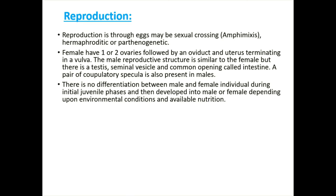Reproduction in nematodes occurs through eggs and is mainly sexual. Modes of reproduction include amphimixis, hermaphrodite, and parthenogenetic reproduction. Females have one or two ovaries followed by an oviduct and uterus terminating in a vulva. The male reproductive structure is similar but includes testes, seminal vesicles, and a common opening. A pair of copulatory spicules is also present in males. There is no differentiation between male and female individuals during the initial juvenile phases; differentiation depends on environmental conditions and available nutrition.